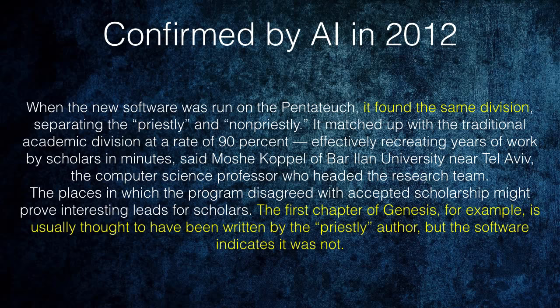Why is this important? If we're going to look at where the sacrifices come from, virtually every scholar I've read who studies this is almost unanimously agreed on one thing: the very last thing added to the Bible was the sacrificial system. Originally the J and E documents did not have any of the sacrifices — they were later added by the priests. The reason scholars believe this is because the priests had an ulterior motive; they were getting wealthy off the free meat they received from the sacrifices.